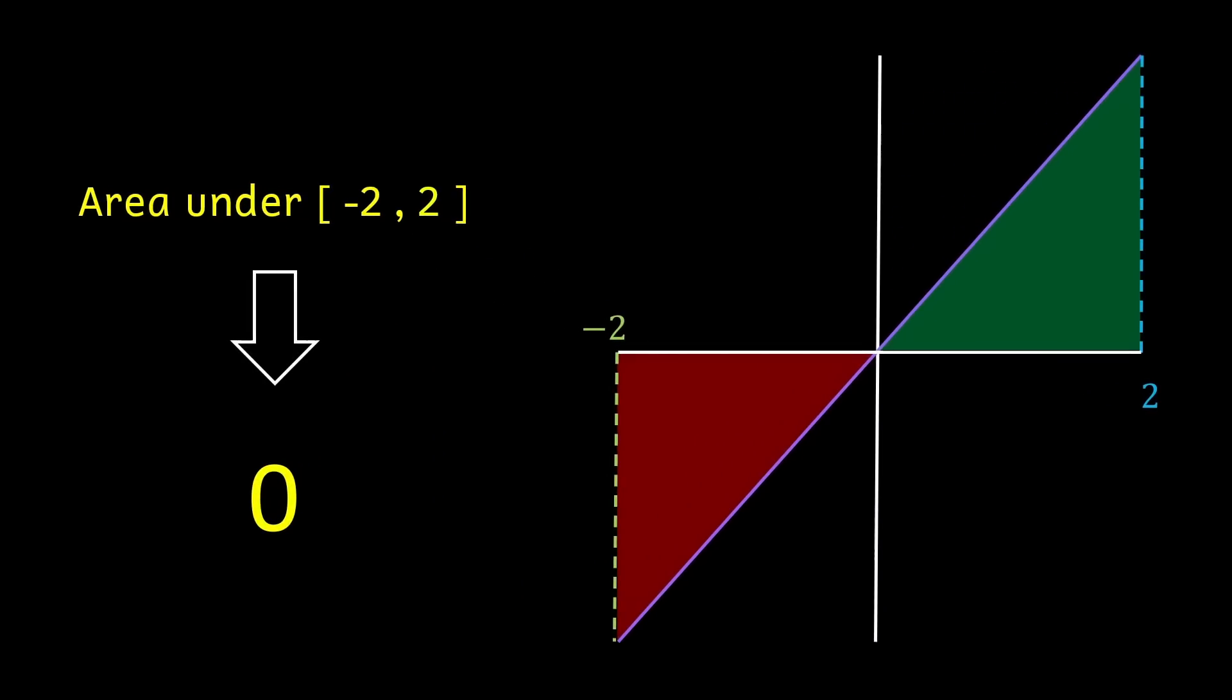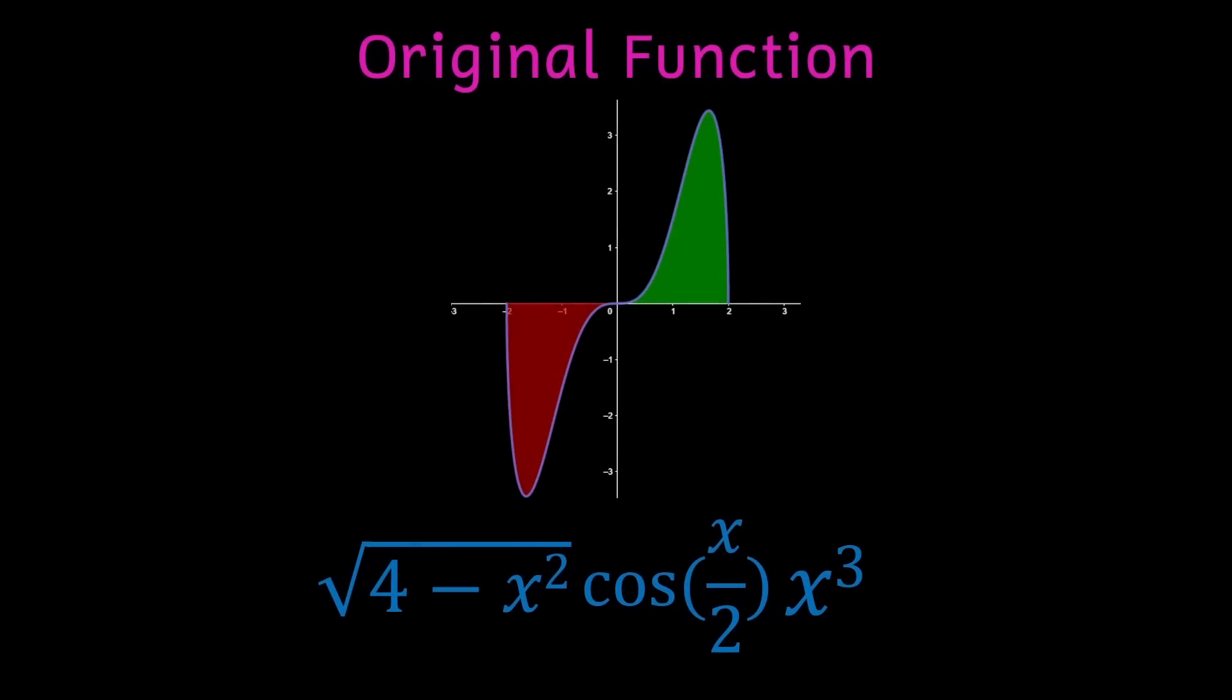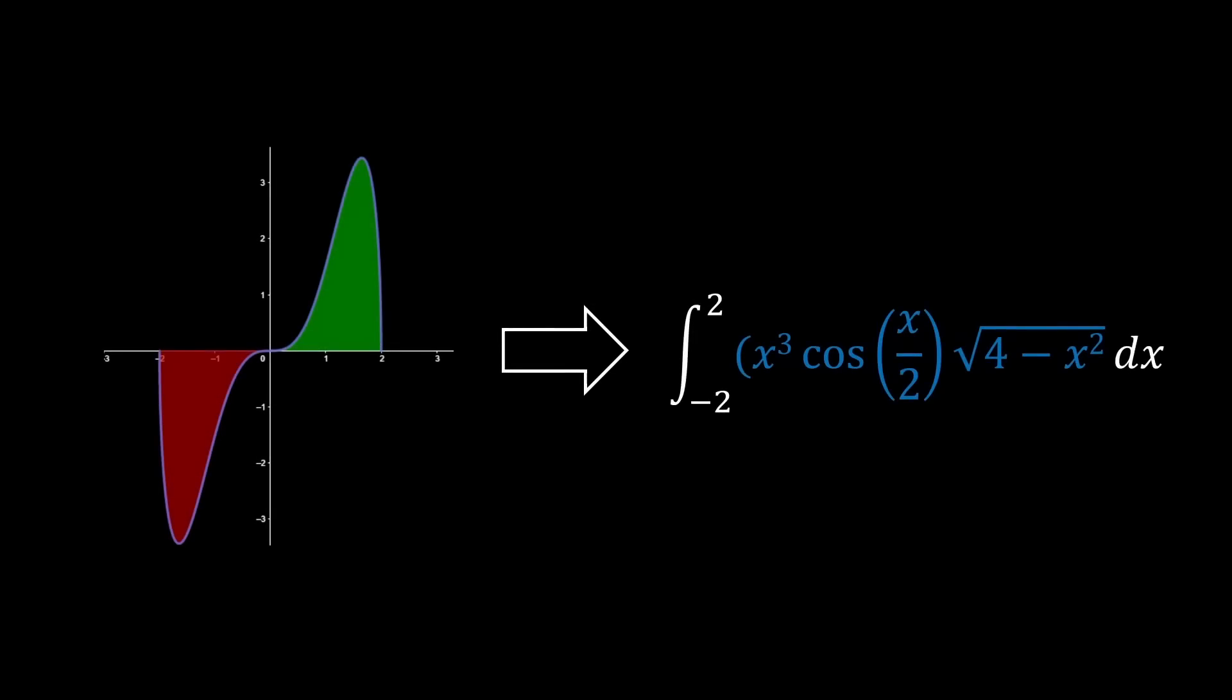This means the total area we get over their combined interval is zero. Going back to our original function, we can apply this exact same principle because our interval is symmetric around x equals zero. And what that means is we can substitute this whole integral with zero without needing to do hours of complex calculations.